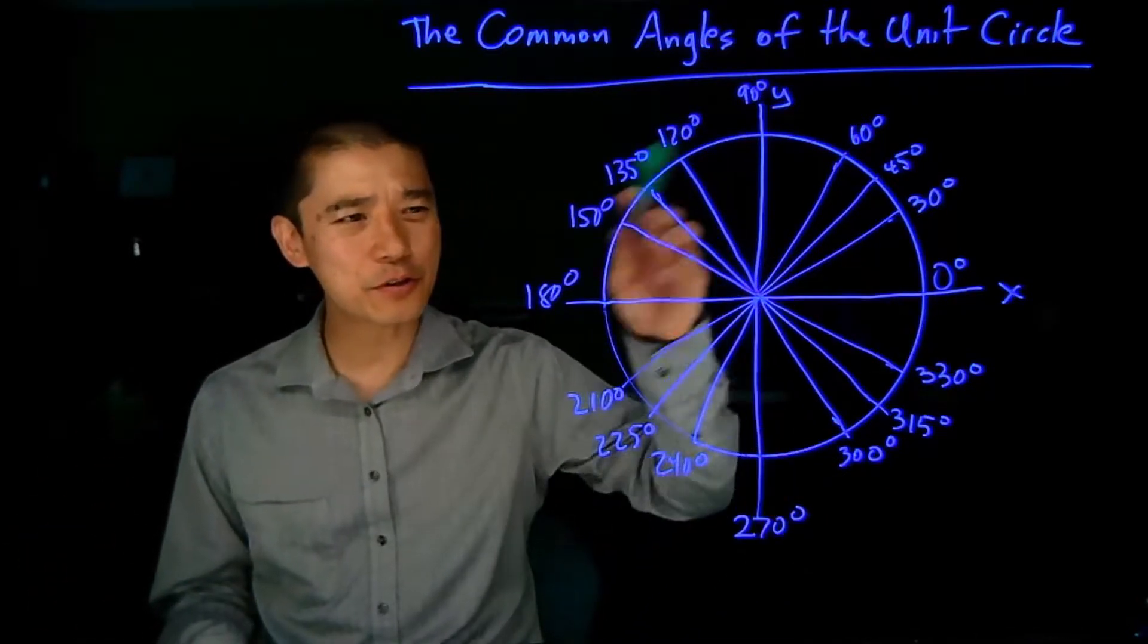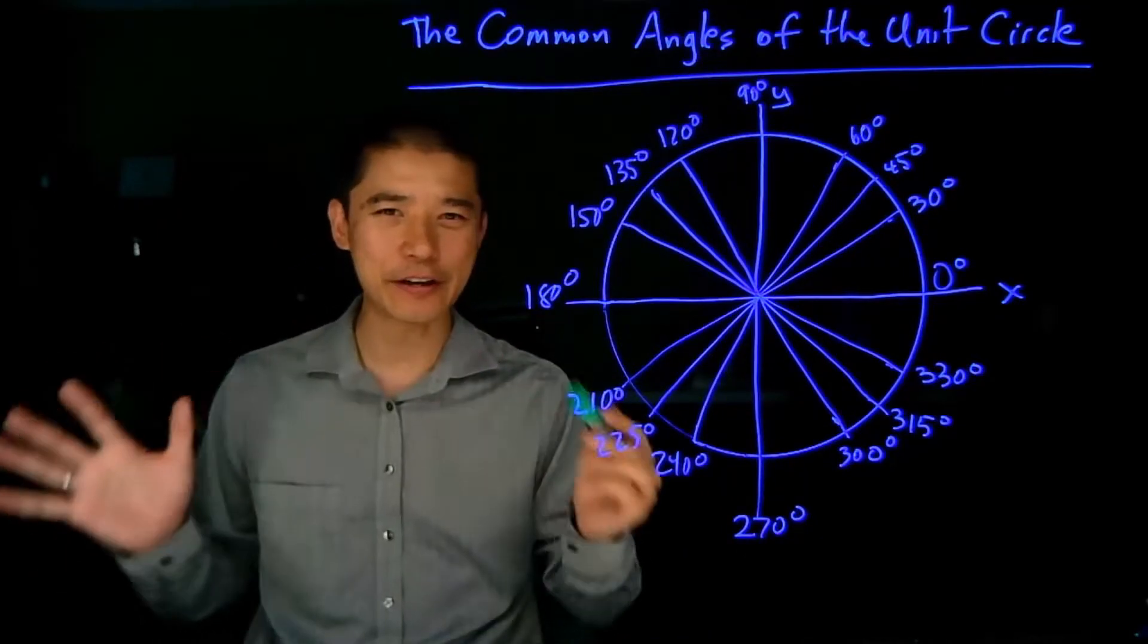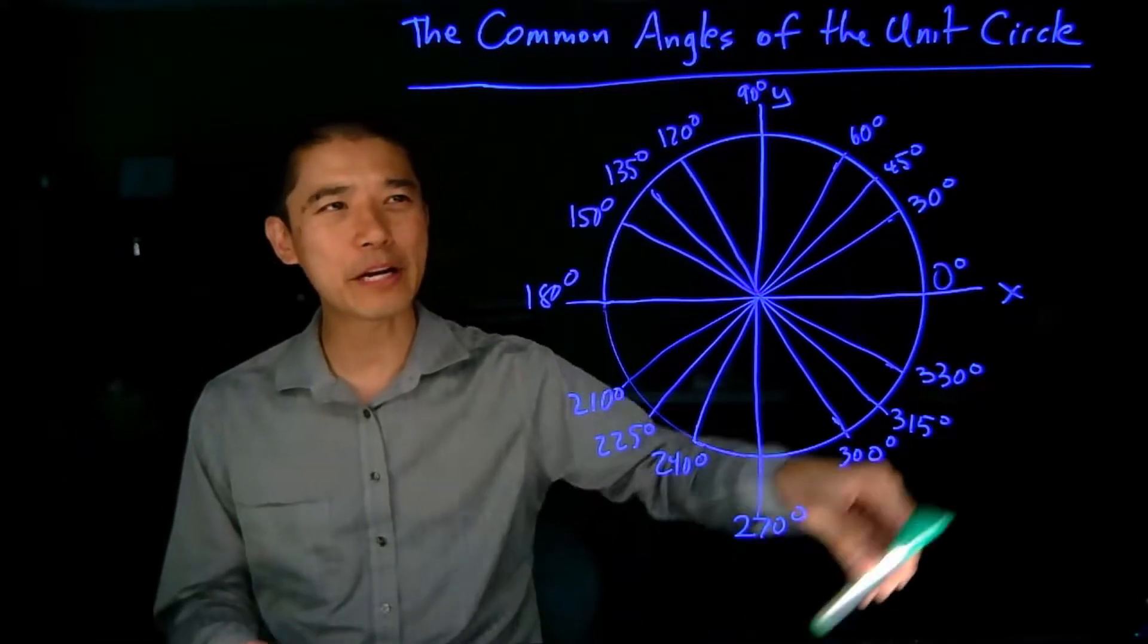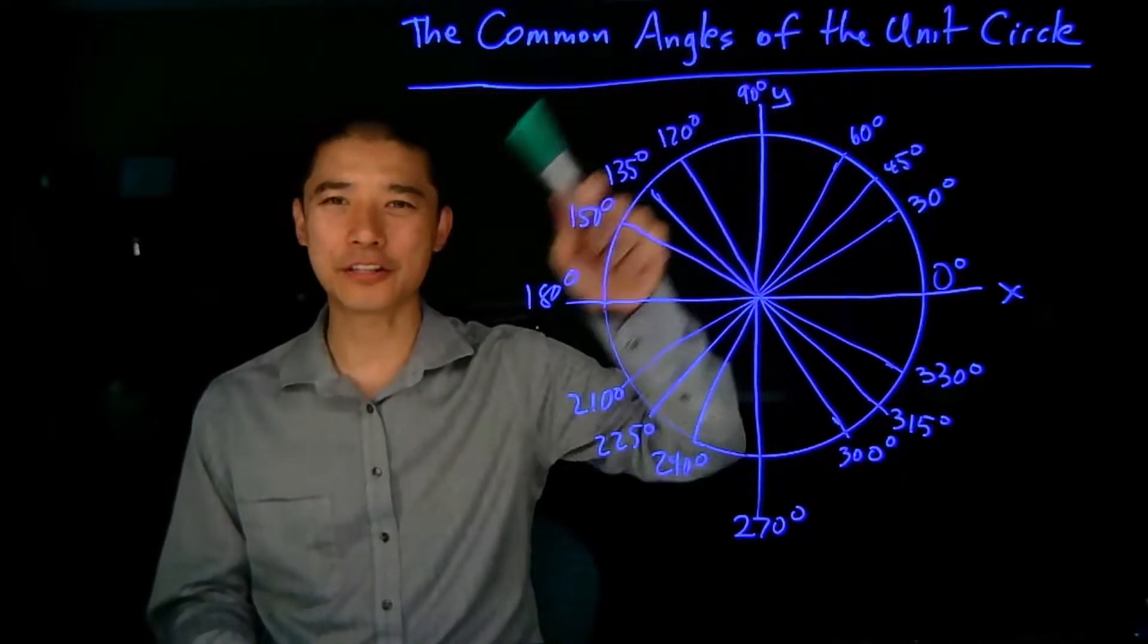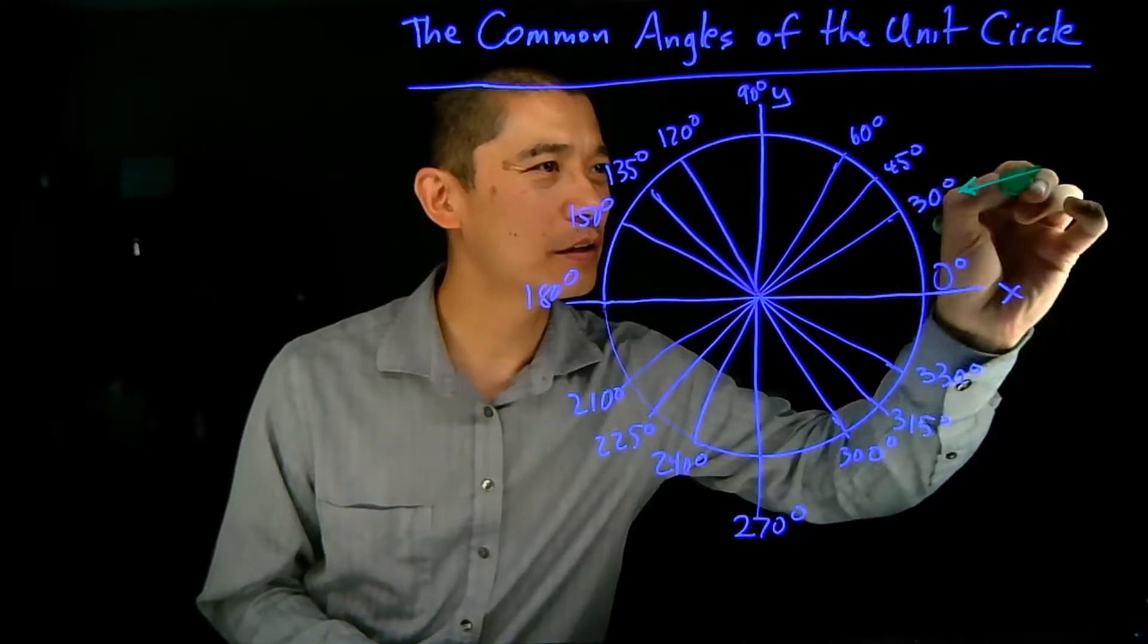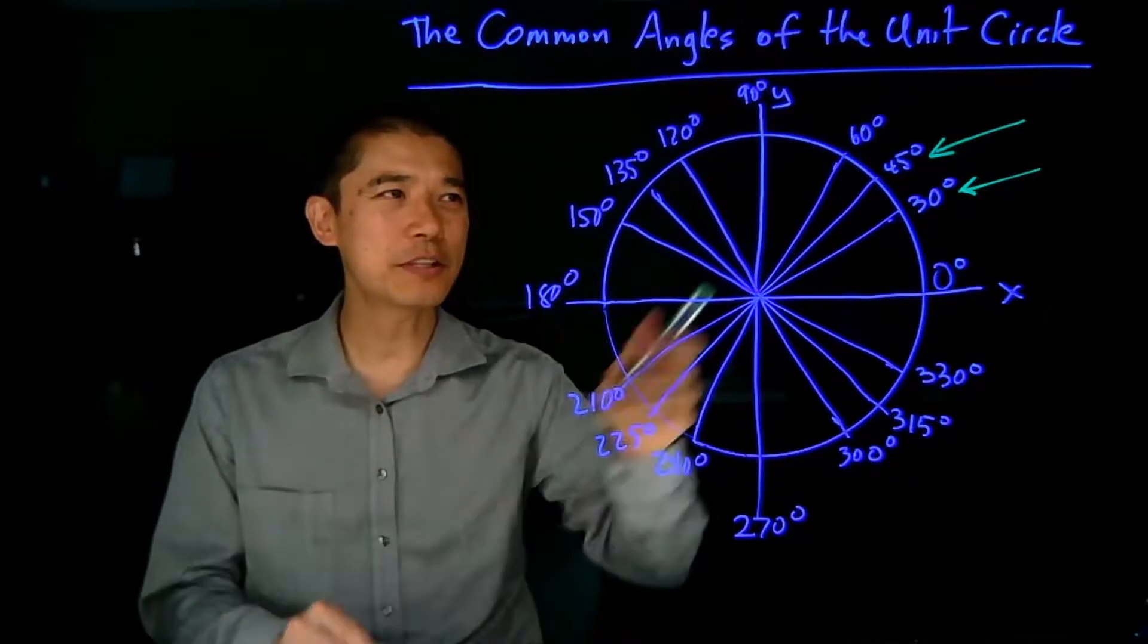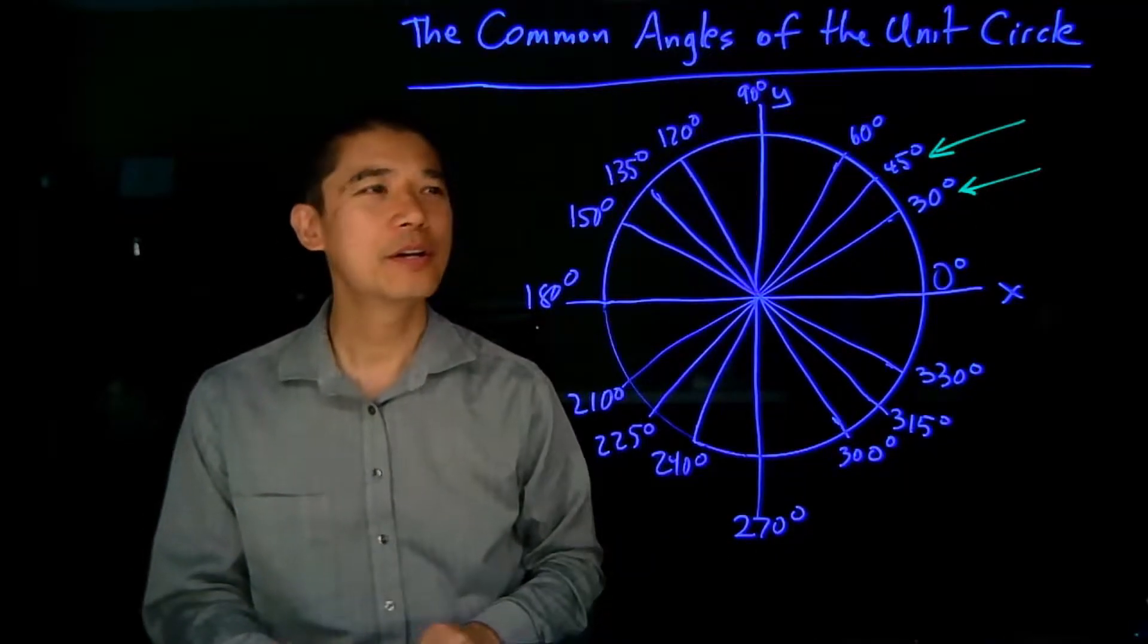The unit circle diagram has special angles listed on it. These angles are the common values that we use and we're going to evaluate functions known as the sine and cosine functions on it later. But right now we're just going to focus on these angles. Rather than thinking about all these angles, we just want to focus on these two right here: the 30 degree angle and the 45 degree angle, because using these two angles we can actually generate the rest of this diagram.